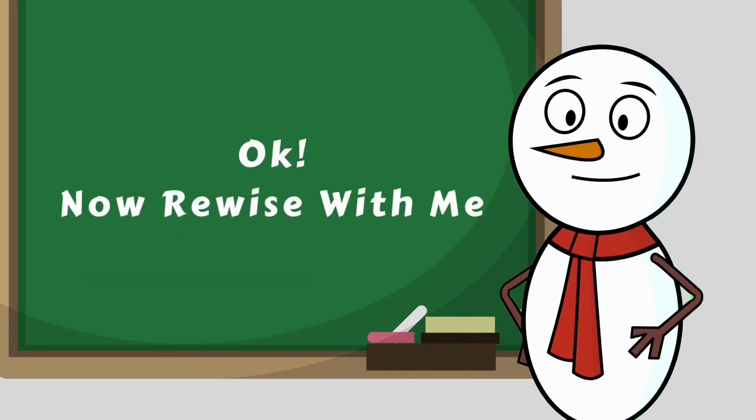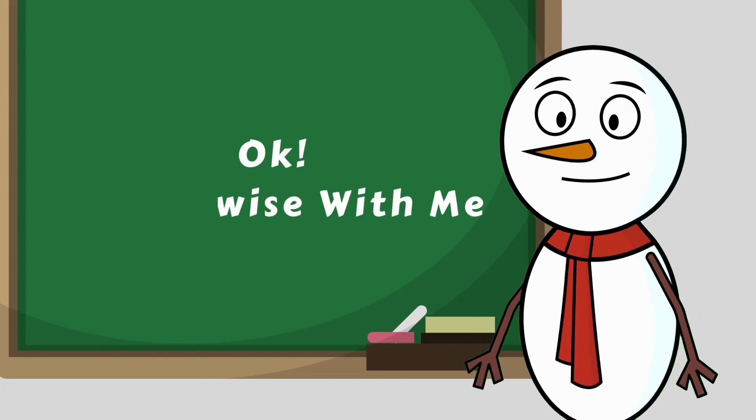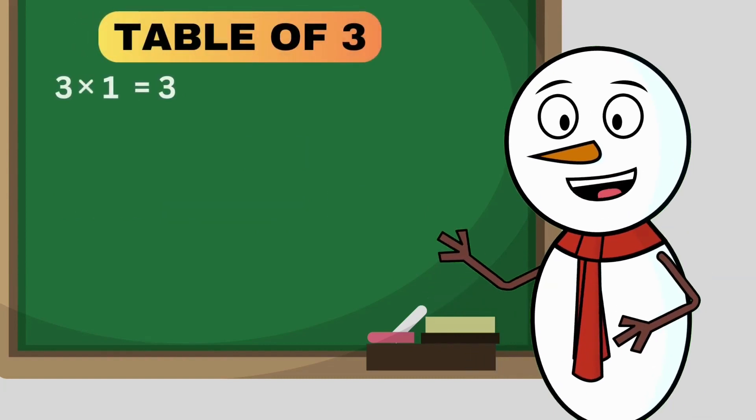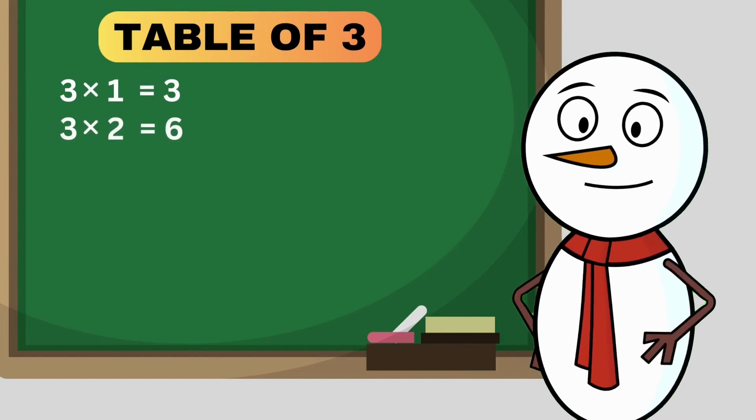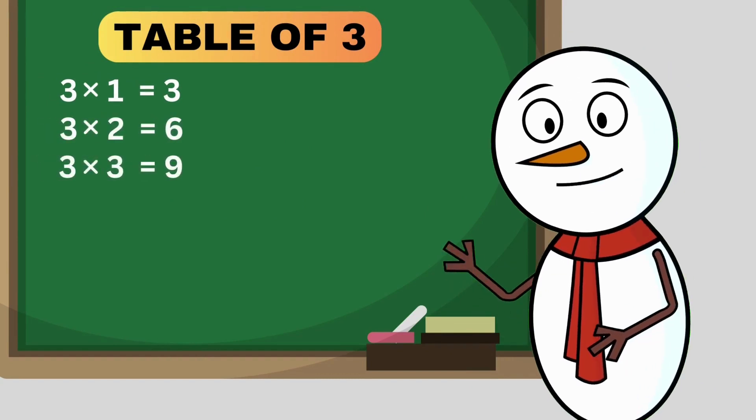Okay. Now revise with me. Table of 3. 3 times 1 is 3. 3 times 2 is 6. 3 times 3 is 9.